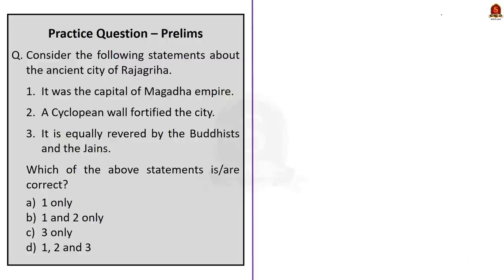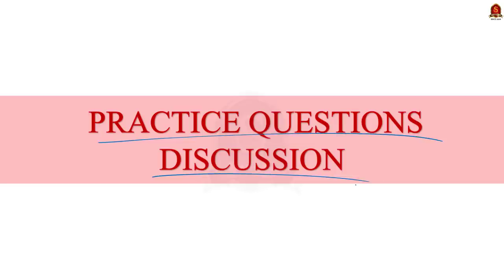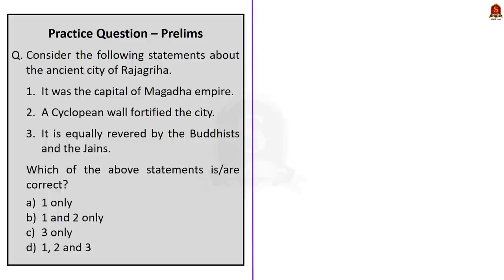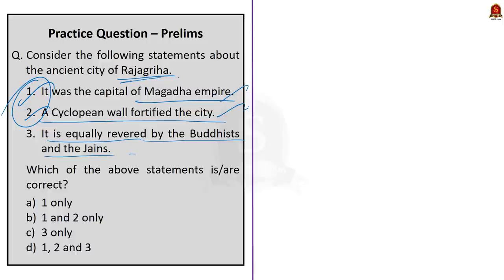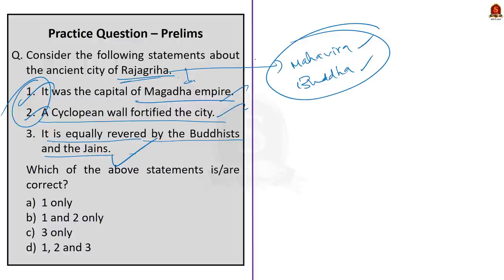Now let us look at the preliminary practice questions. Question one: Consider the following statements about the ancient city of Rajagriha. Statement one — it was the capital of the Magadha Empire. Statement two — a Cyclopean wall fortified the city. Statement three — it is equally revered by Buddhists and Jains. All three statements are correct. Rajagriha was the capital of Magadha, the Cyclopean wall fortified it, and Rajagriha was favored by both Lord Mahavira and Gautama Buddha, making it a major hub for Jain and Buddhist pilgrims. The answer is option D — all three.